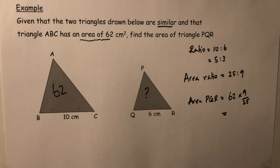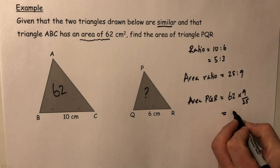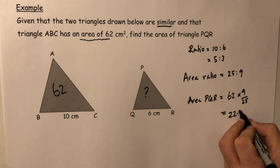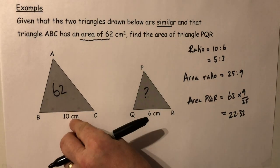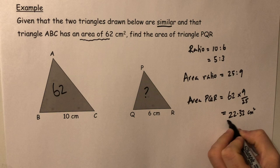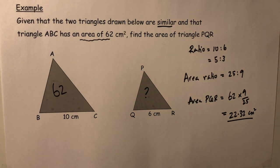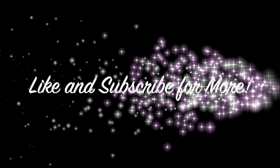So 62 times 9 divided by 25 comes out as 22.32 centimeter squared.